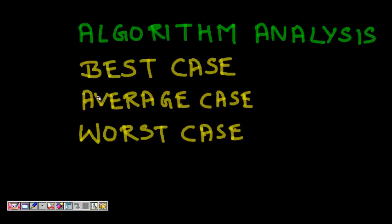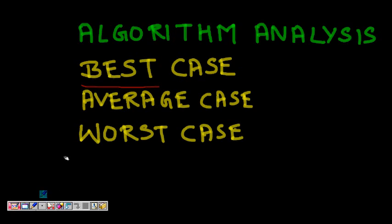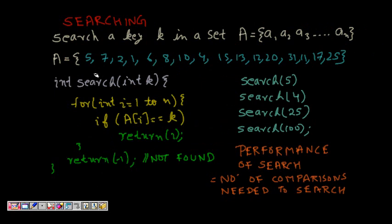In this lecture we are going to learn about analyzing algorithms — the analysis of algorithms and the three cases of performance. The first one is the best case, which is the best way the algorithm can perform. The second is the average case, how the algorithm performs on average. The third is the worst case — how much time it will take when the input is worst for our algorithm. Let's see with a simple example.